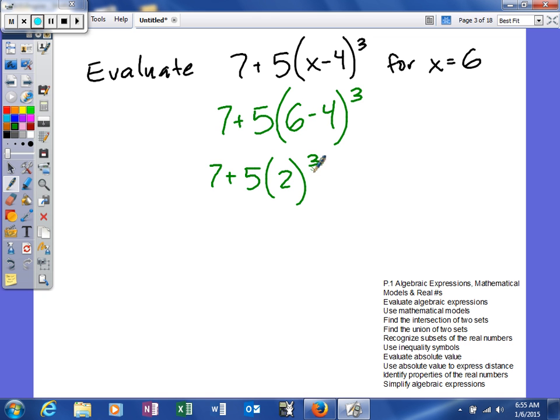Then, I need to use exponents, so 2 cubed is 2 times 2 times 2. So when you multiply 2 times 2, it's 4. Multiply it by 2 again, and you will get 8.